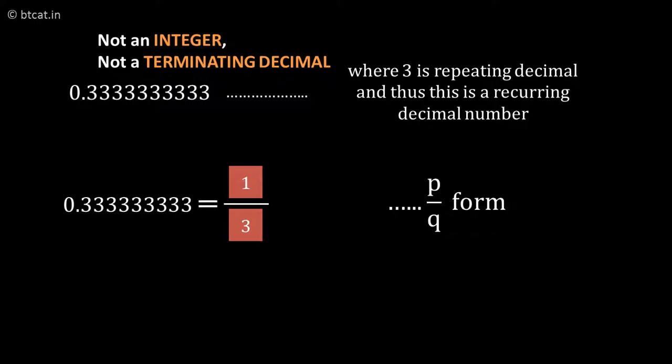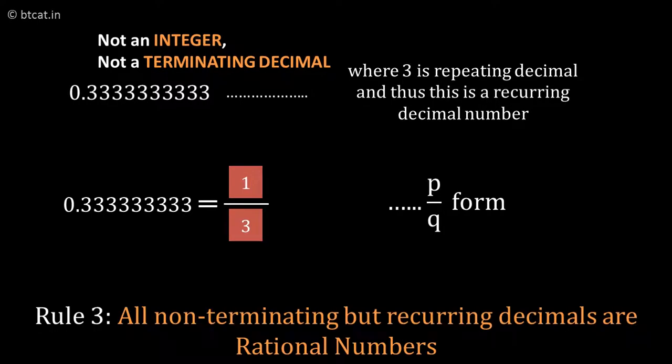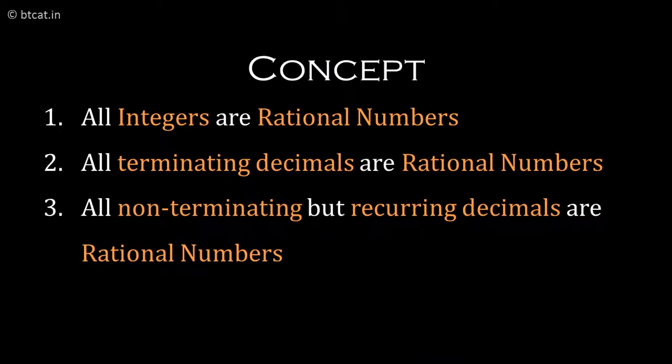Very shortly, in the next video series, I will tell you how to convert 0.3 bar into 1/3 rational number. But as of now, what you should understand is that the third rule of rational numbers is: all non-terminating but recurring or repeating decimals are rational numbers.